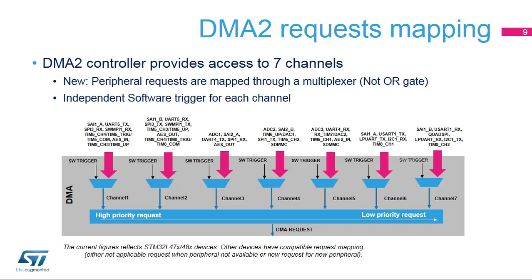For example, unique DMA2 peripheral requests include TIM5, TIM8, LP UART, SWMPI1, UART4, UART5, and AES.